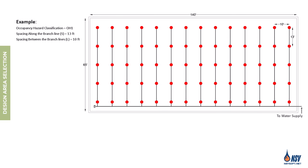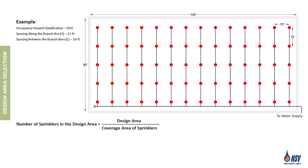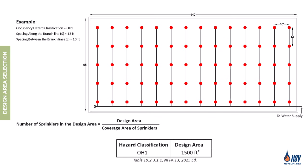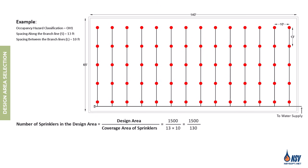In this example, we're locating the design area within an ordinary hazard group 1 occupancy where 70 standard spray sprinklers are uniformly spaced. The spacing between sprinklers along the branch line, or S, is 13 feet, and the spacing between branch lines, or L, is 10 feet. The first step is to calculate the number of sprinklers expected to activate during a fire by dividing the design area — 1,500 square feet — by the coverage area of each sprinkler. The coverage area is 130 square feet, calculated using the S times L method. Dividing 1,500 by 130 gives approximately 11.5 sprinklers, which we round up to 12 sprinklers.